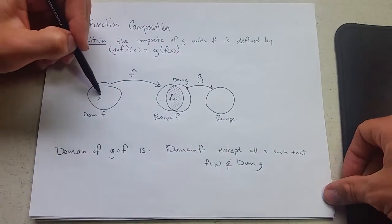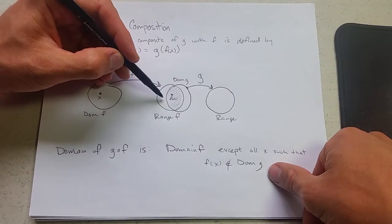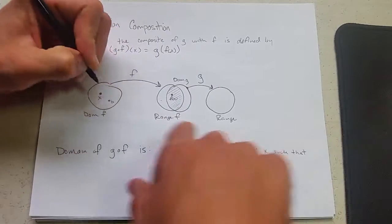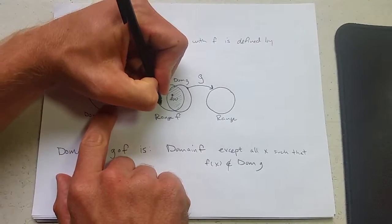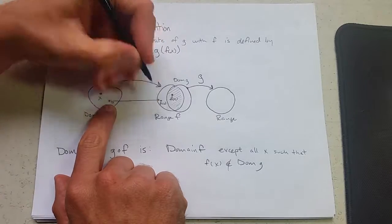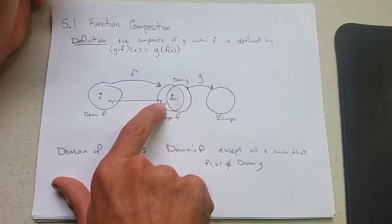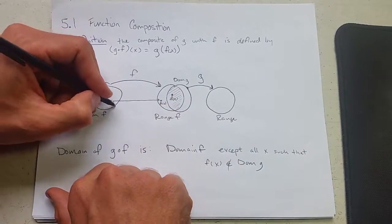So for example, I'll call this b right here for a bad value. And this right here would be f of b. So this would be a bad value if when you f'd it, it was not inside the domain of g. So we'd have to throw this one away.